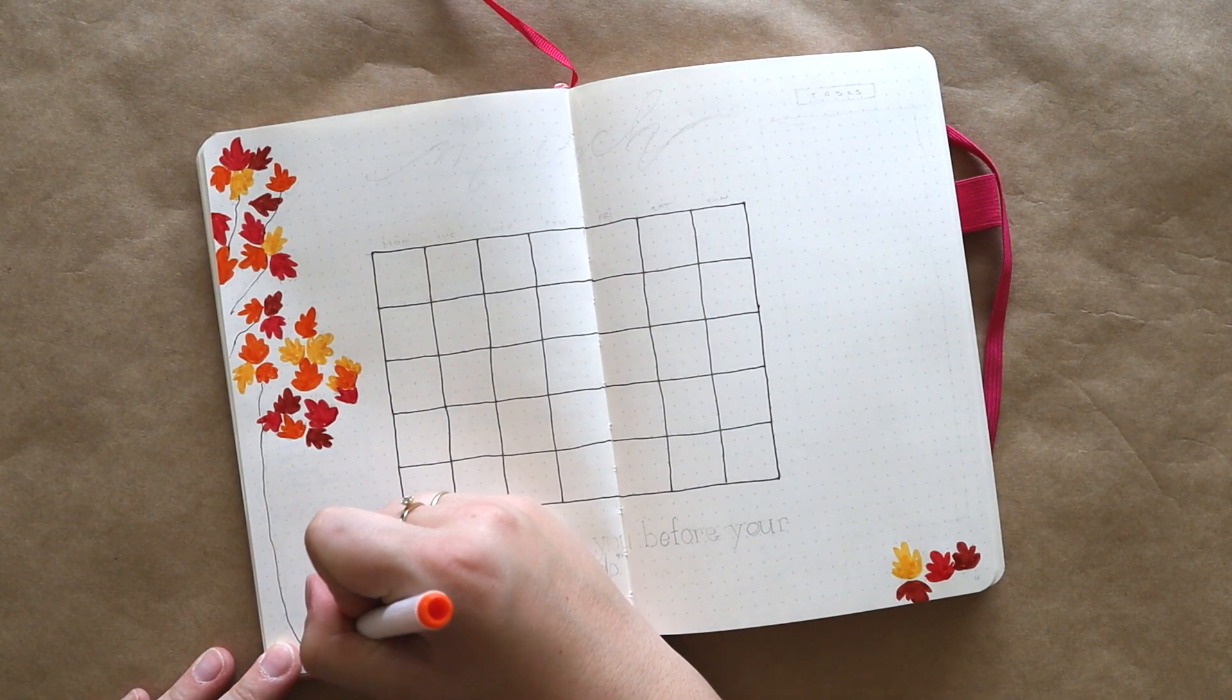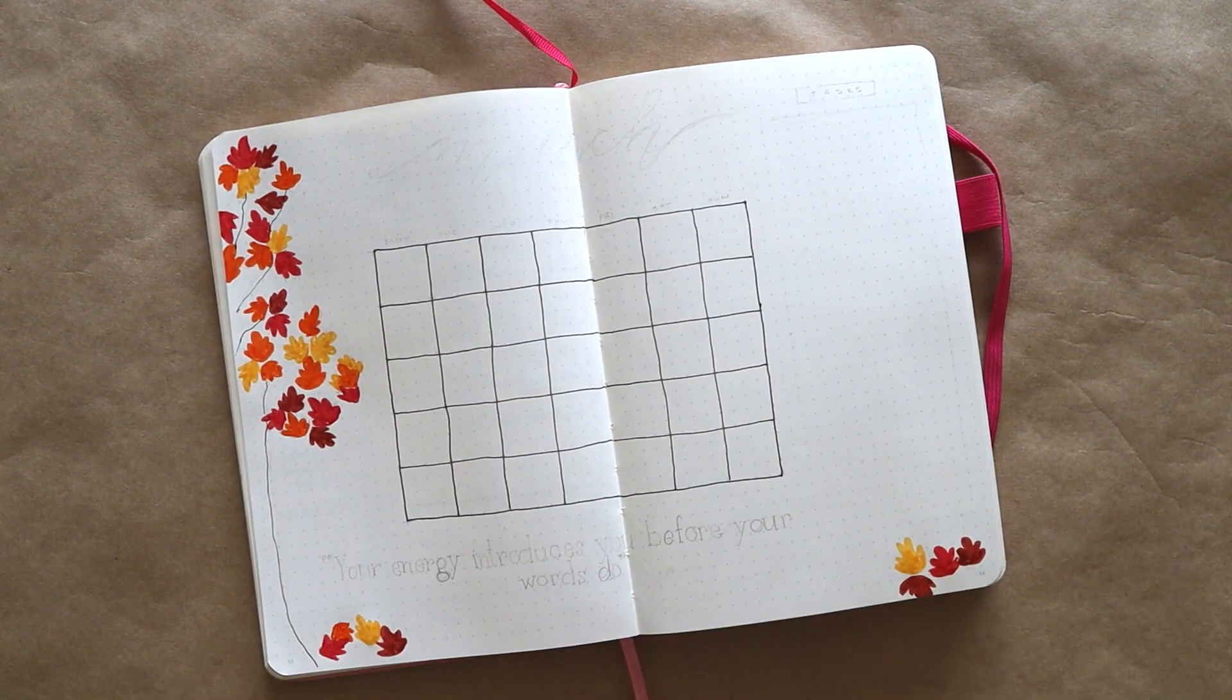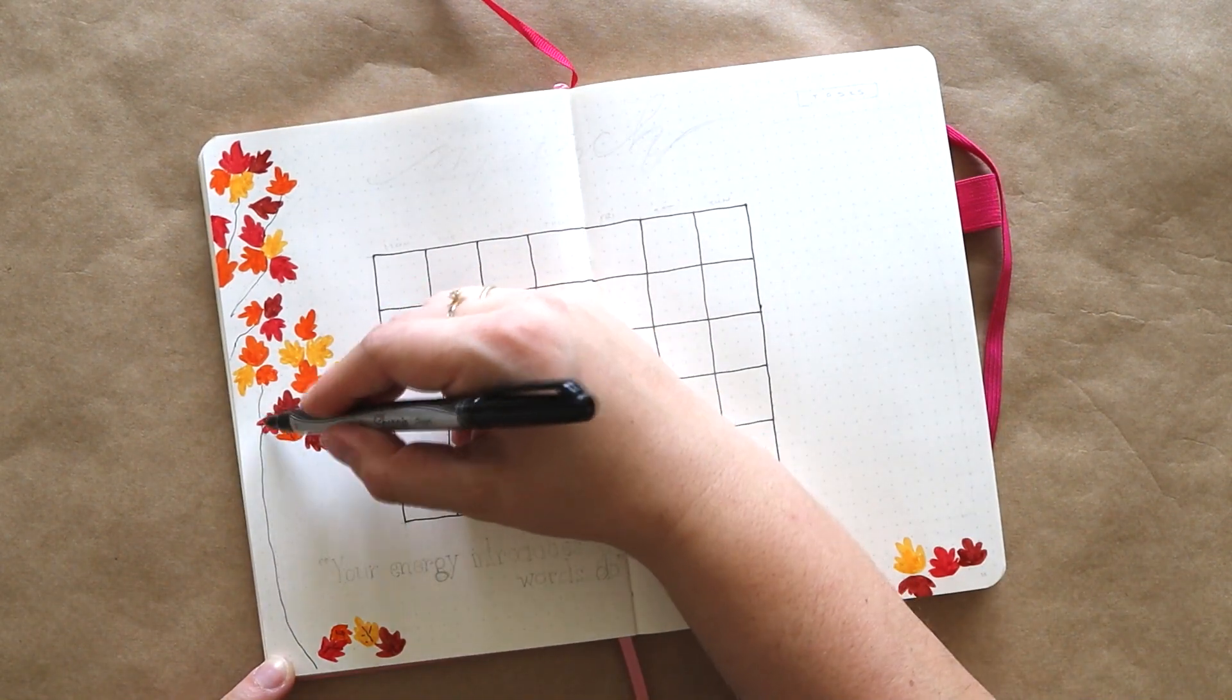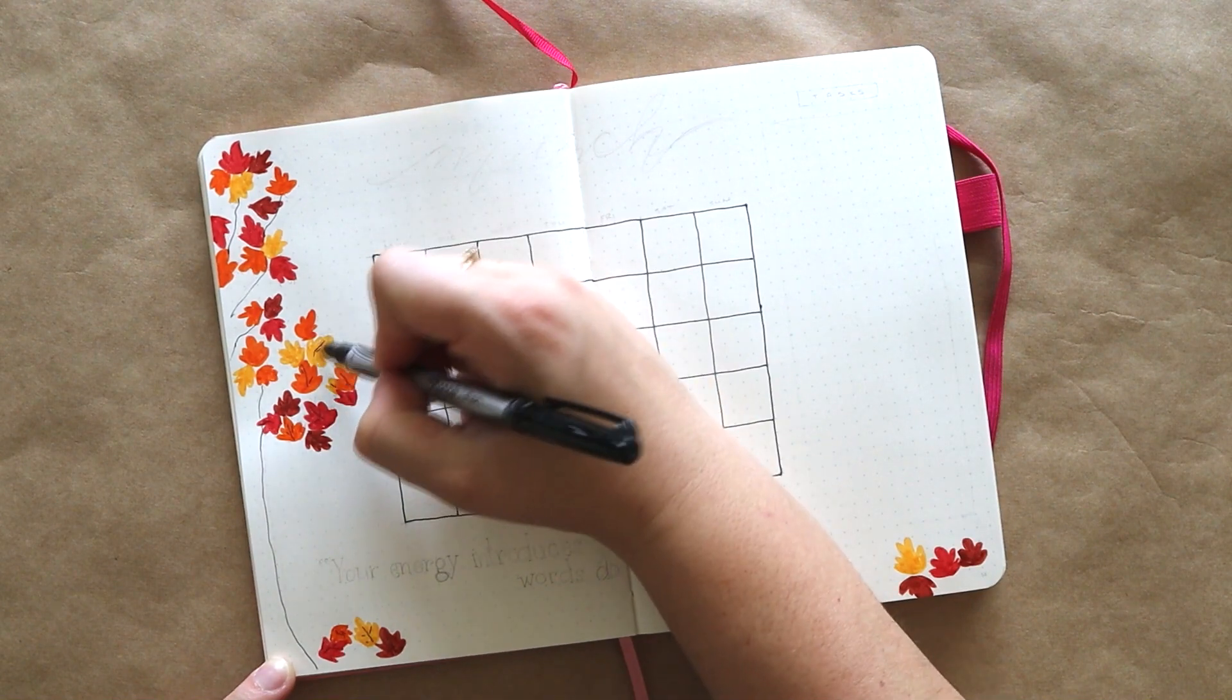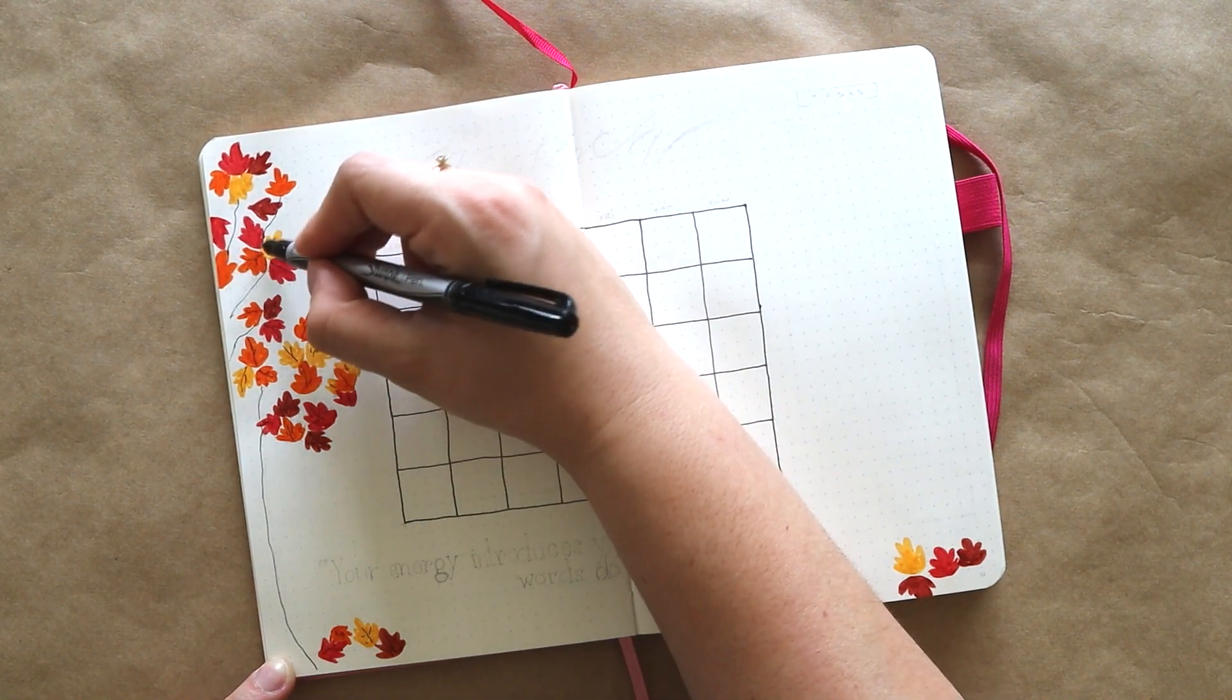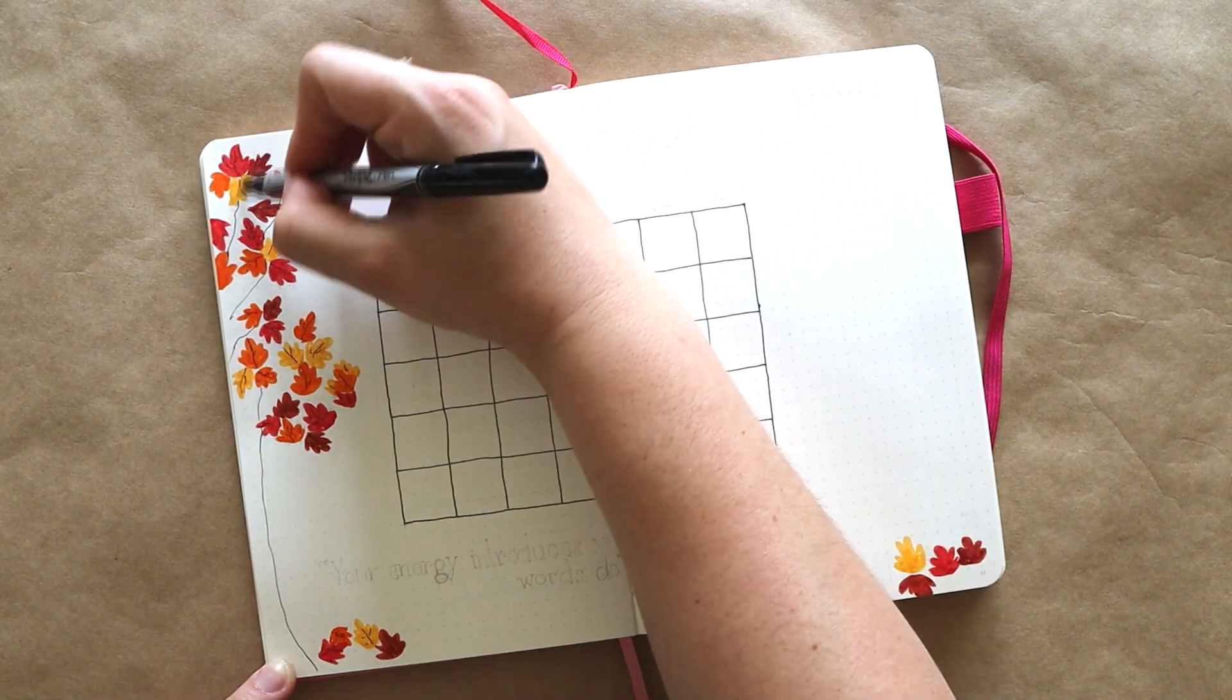I'm also using my fine tip marker just to add in some leaf veins as well—just little suggestions, nothing exact, nothing too detailed. Just a couple of lines here and there to add a little bit of a suggestion that they are in fact leaves and not weird handprints or something.